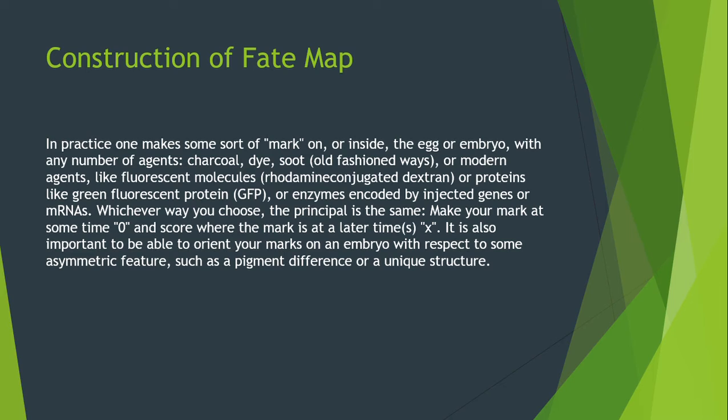It is also important to be able to orient your marks on an embryo with respect to some asymmetric feature, such as a pigment difference or unique structure. If you are making two or three marks on a particular embryo or egg, you should change the color of the marking agent — use black, then blue — because otherwise you can't identify which structure is which when it grows up.